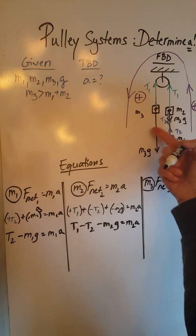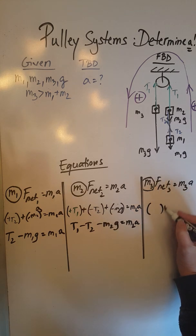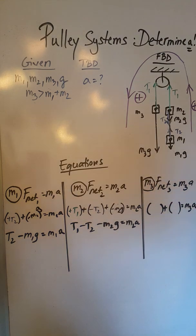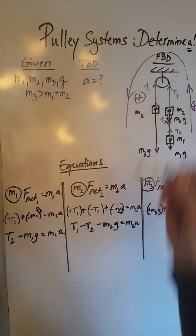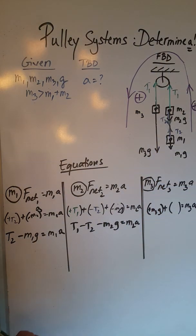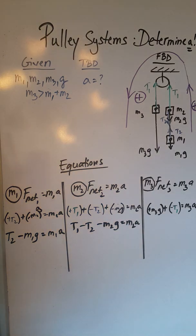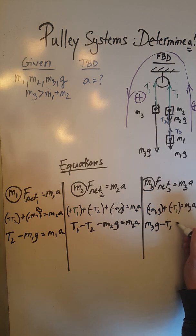And I will do the same thing for the third object over here. This one has two forces acting upon it whose vector sum must be equal to M3A. The two forces are our positive M3G and negative T1. When we simplify this, we get the scalar equation M3G minus T1 equals M3A.